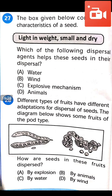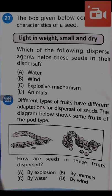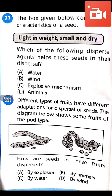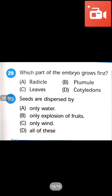Question: which part of the embryo grows first? For dispersal of seeds, the diagram shows some fruits of the pod type. How are the seeds in these fruits dispersed? Answer will be A — by explosion. Pods are a type of fruit whose seeds get dispersed mainly by explosion or splitting method. Question number 29: which part of the embryo grows first? Answer will be A — Radicle. The Radicle grows first; it is the first root of the plant.